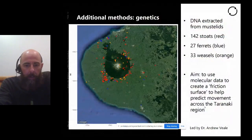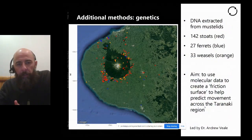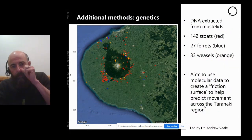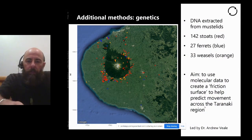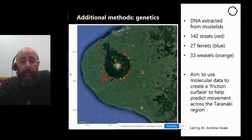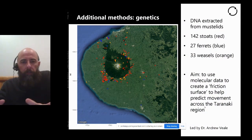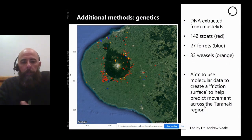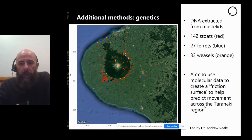We also have alternate methods — a molecular approach led by Dr. Andrew Veal. We've been collecting tissue samples throughout the entire area; the red dots are stoats, and we have at least 160 stoats analyzed so far — all extracted and currently being sequenced. This is another way to understand large-scale movement across landscapes. He's trying to create a friction surface to predict movement based on what has happened before, complementing the fine-scale data we're after.